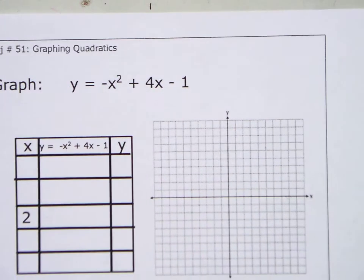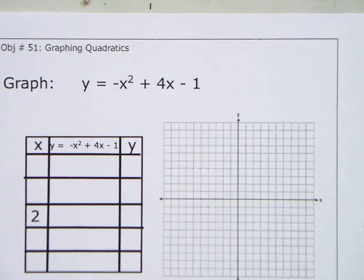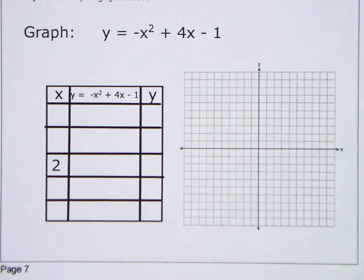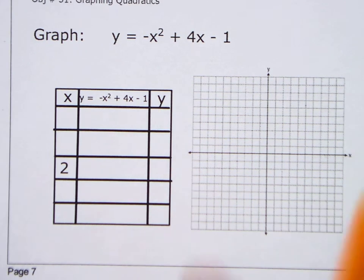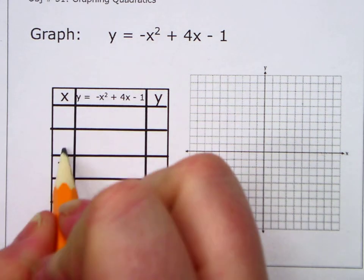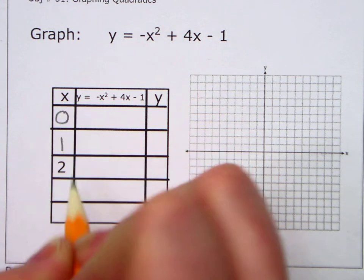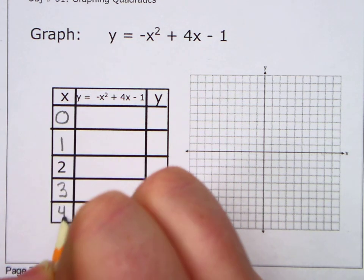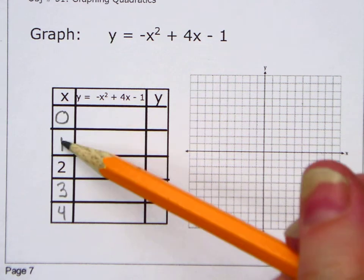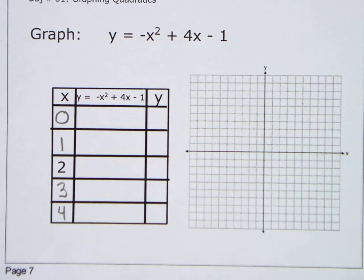Next, all right, so let's graph some more. So we have negative x squared plus 4x minus 1. All right, so now, first we're going to, I gave you the middle number. The middle number's 2. What number comes right before 2? 1, 0, 3, and 4. And then check, 0, 1, 2, 3, 4. Check that that's right. You should be able to do this.